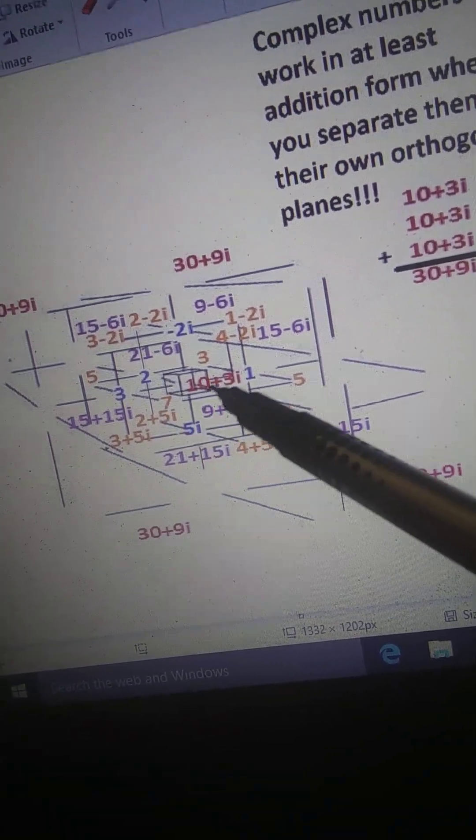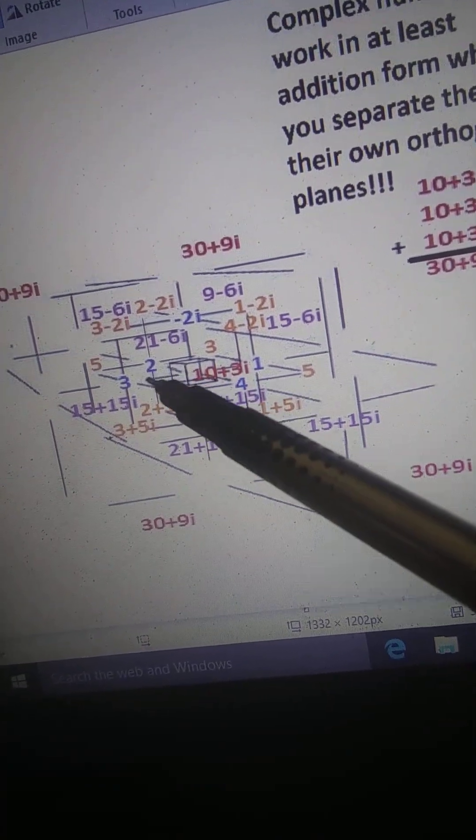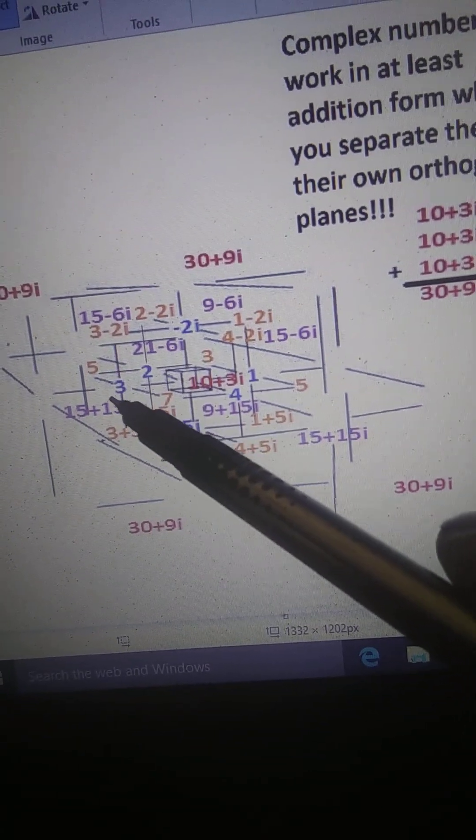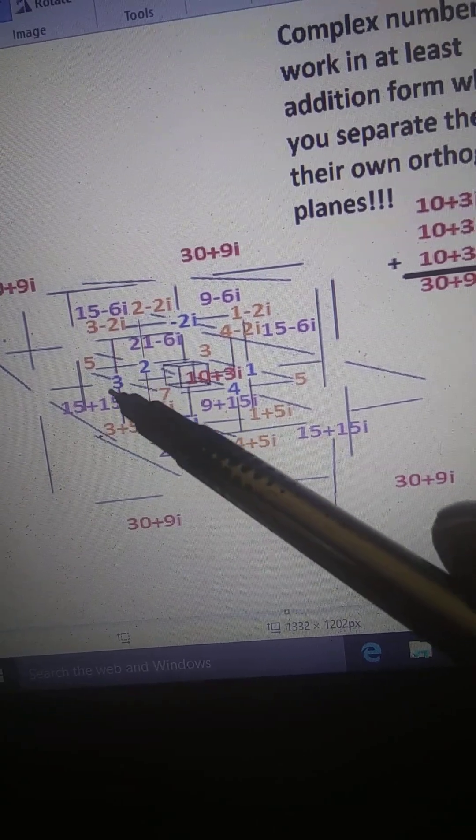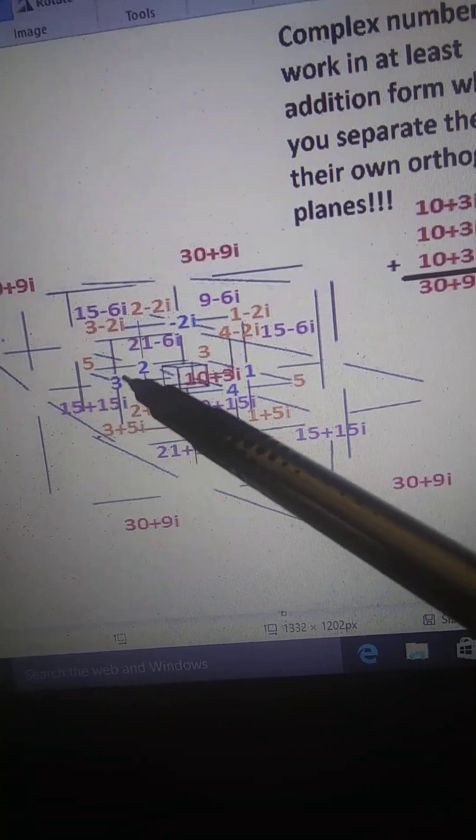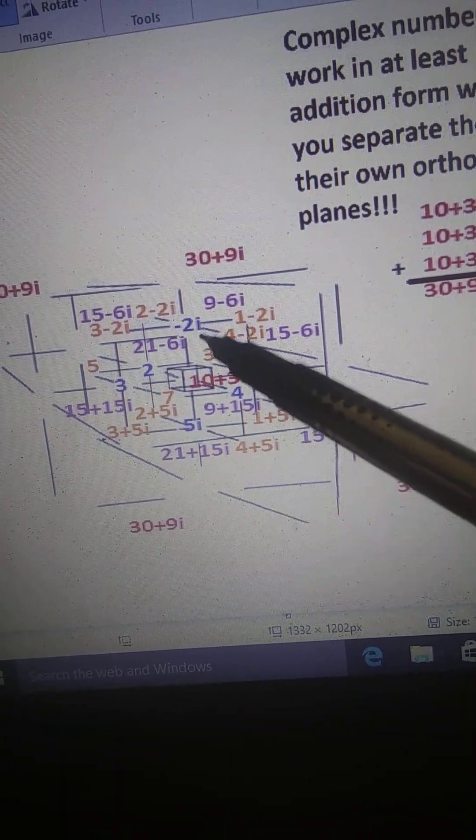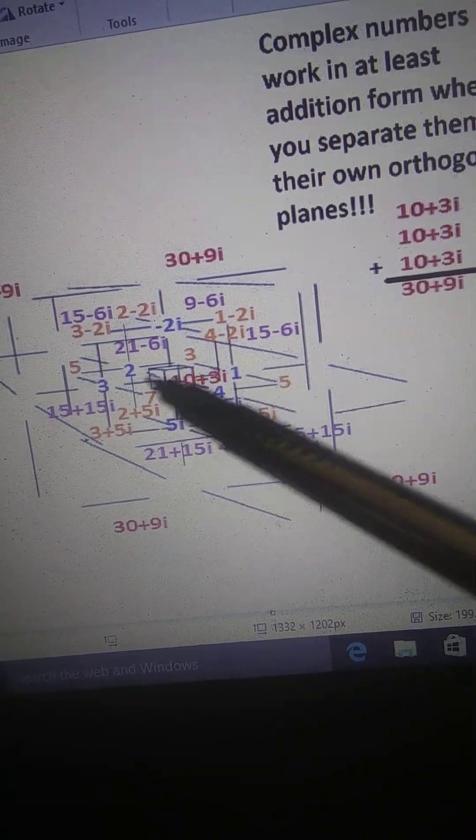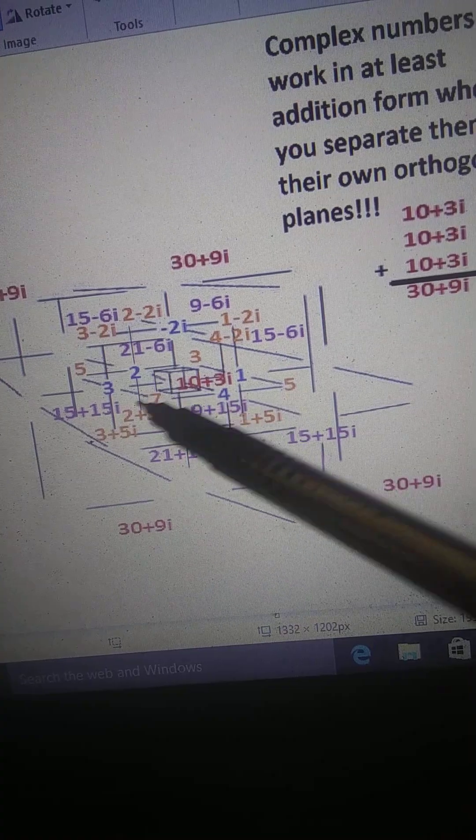When you do the addition, at least in addition form, I haven't discovered multiplication form yet but I have a hunch that it'll work somehow. The key is to separate the two components of the complex number. All of these are real numbers, these four numbers around here.